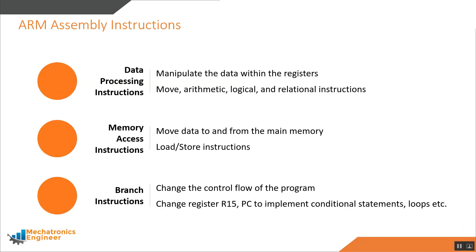ARM assembly language instructions can be classified into three different types: data processing instructions, memory access instructions, and branch instructions. Data processing instructions manipulate the data within the registers. These instructions can perform arithmetic, logical, or relational operations, or they can move data into the registers.